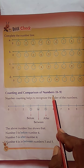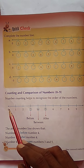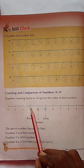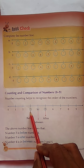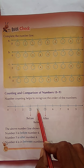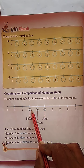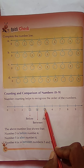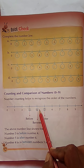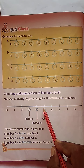Counting and comparison of numbers zero to nine. If you count the numbers zero to nine, number counting helps to recognize the order of the number line: zero, one, two, three, four, five, six, seven, eight. Here are some circles over the numbers three, four, and five. Three is the number before four — before number means the number that comes before.